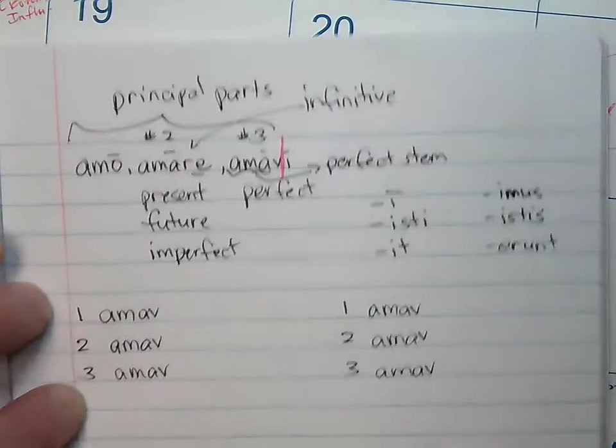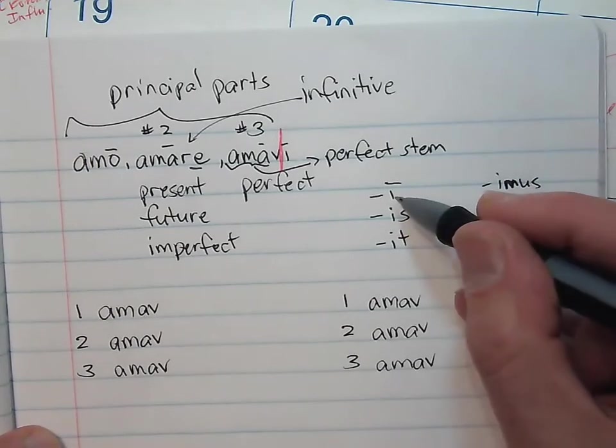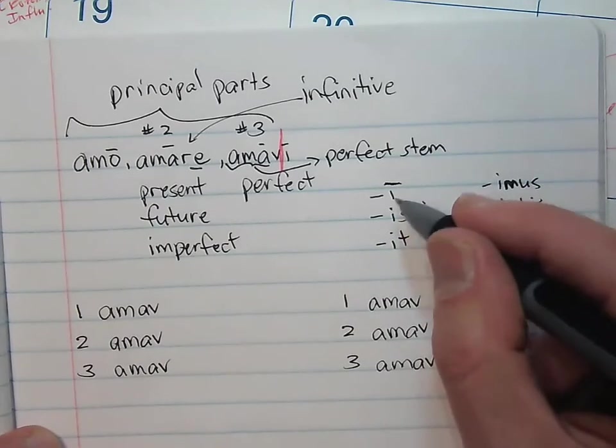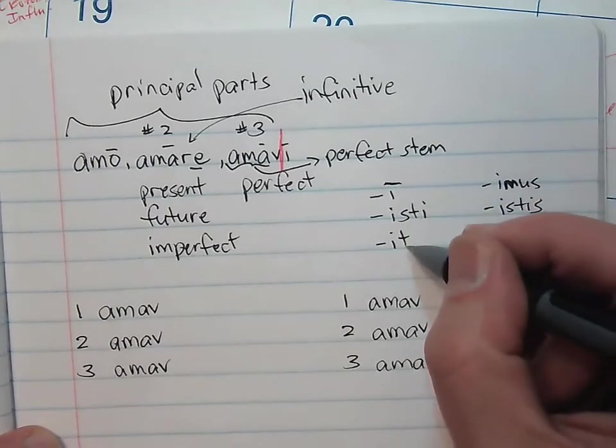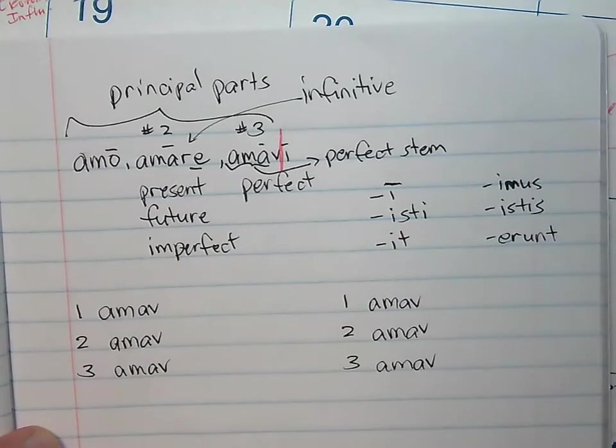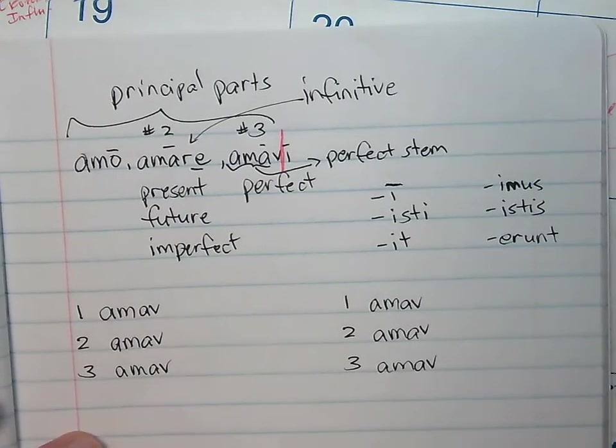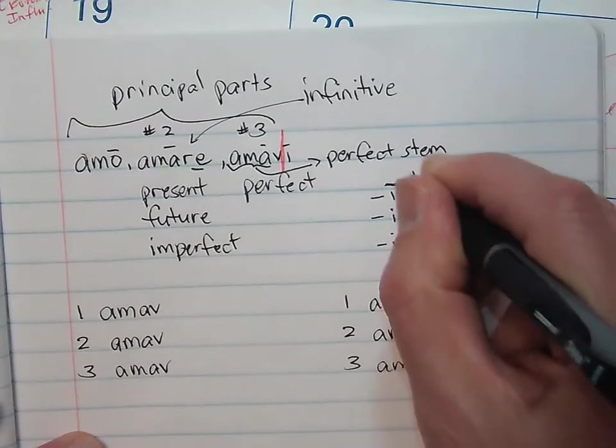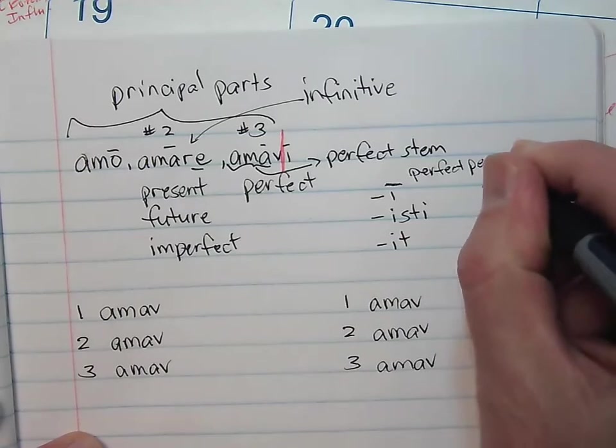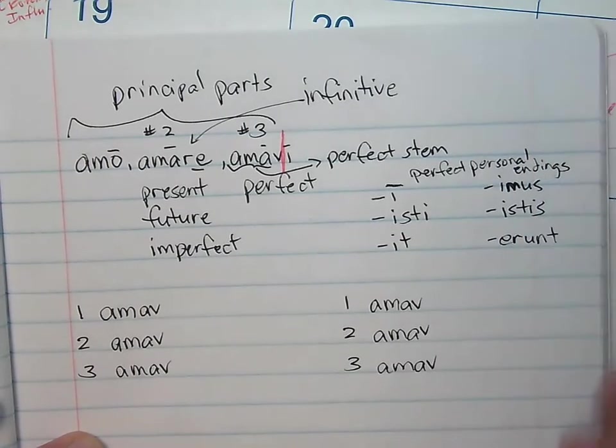That looks pretty good. These are my six endings. Here's how they're pronounced in English. I know that's an I with a macron over it, but here's how you pronounce it: E, ist, it, emus, istis, erunt. Students, you need to learn these six endings. These are my perfect personal endings.